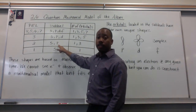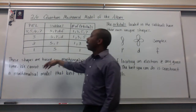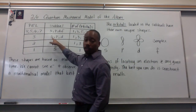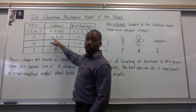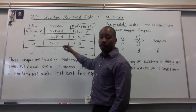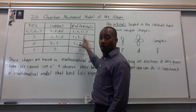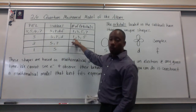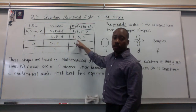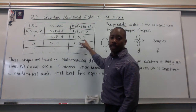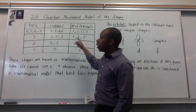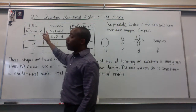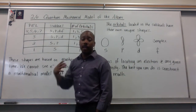This trend continues as we rise in energy. In energy level three, I have three sub-levels: S, P, and D. The number of orbitals for each sub-level — for S I have one orbital, P has three orbitals, D has five orbitals. In energy levels four, five, six, and seven, they have the same structure.